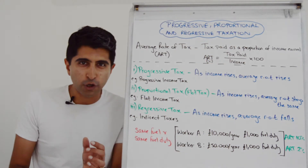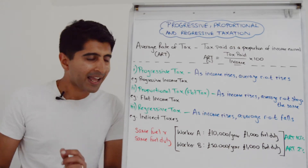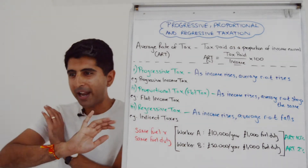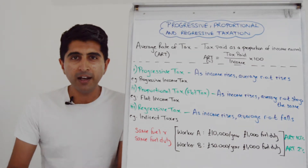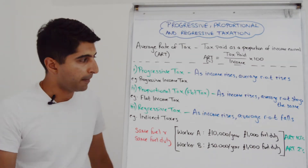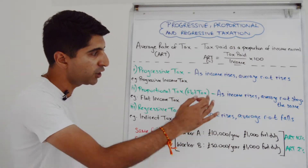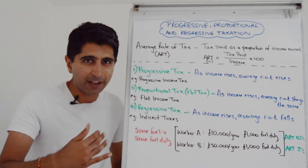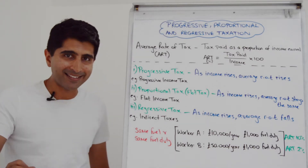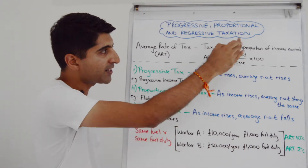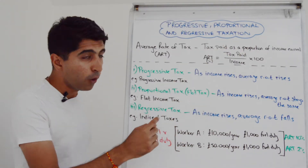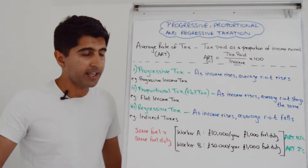A proportional tax is also known as a flat tax. There are countries around the world that have a flat income tax, so no matter how much you earn, the income tax rate is always the same. As a definition, this is a tax where as income rises, the average rate of tax stays exactly the same — the amount of tax you pay as a proportion of your income is always whatever that flat income tax rate is.